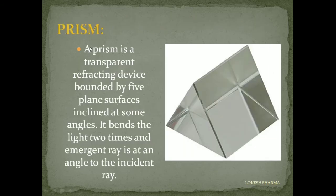First of all, we will discuss dispersion by a glass prism. A prism is a transparent refractive device bounded by 5 plane surfaces that bends light. It bends the light 2 times and the emergent ray is at an angle to the incident ray, and that angle is called the angle of deviation.